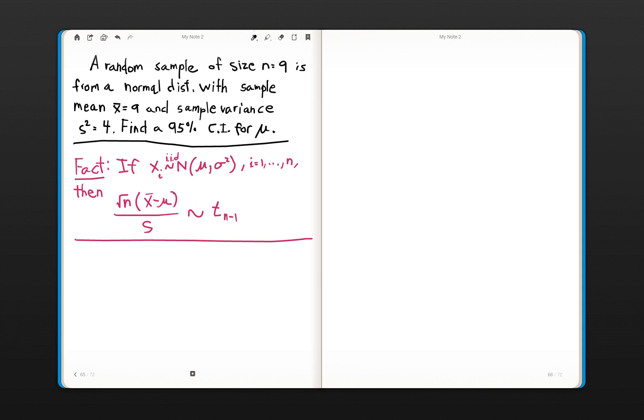So the fact is, if your x sub i are distributed normally with mean mu and variance sigma squared, iid stands for independent and identically distributed, then this quantity here, square root of n times quantity x bar minus mu over s, is distributed as a t distribution with n minus 1 degrees of freedom, where n is our sample size.